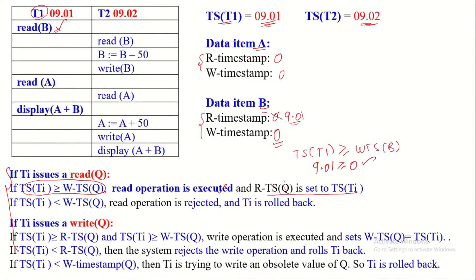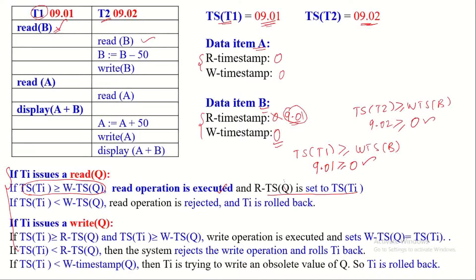Coming to the next operation — read on B by T2 — since read is in conflict with write, the timestamp of T2 must be compared with the write timestamp of B. TS of T2 is 9:02 and write timestamp of B is 0 — condition is satisfied. So this read operation will be executed, and immediately the read timestamp of B must be updated with the timestamp of T2.